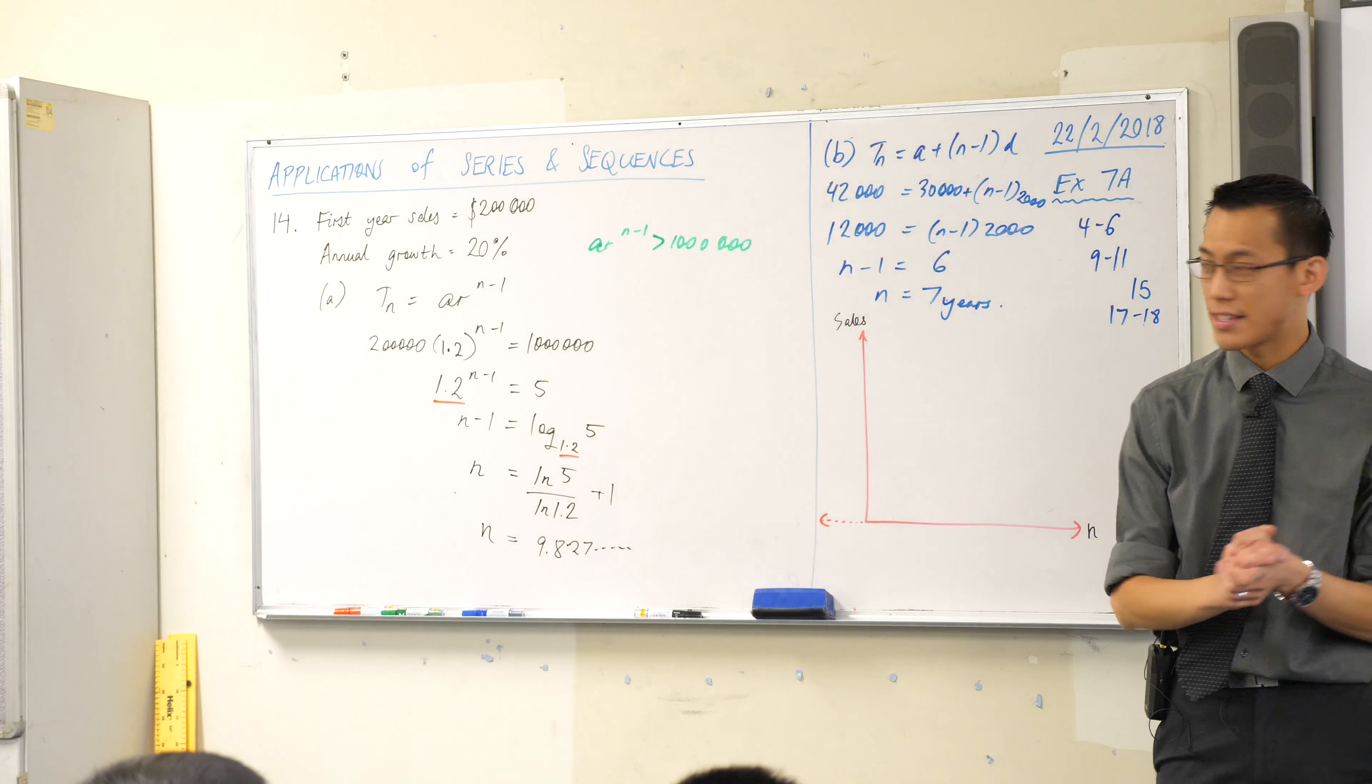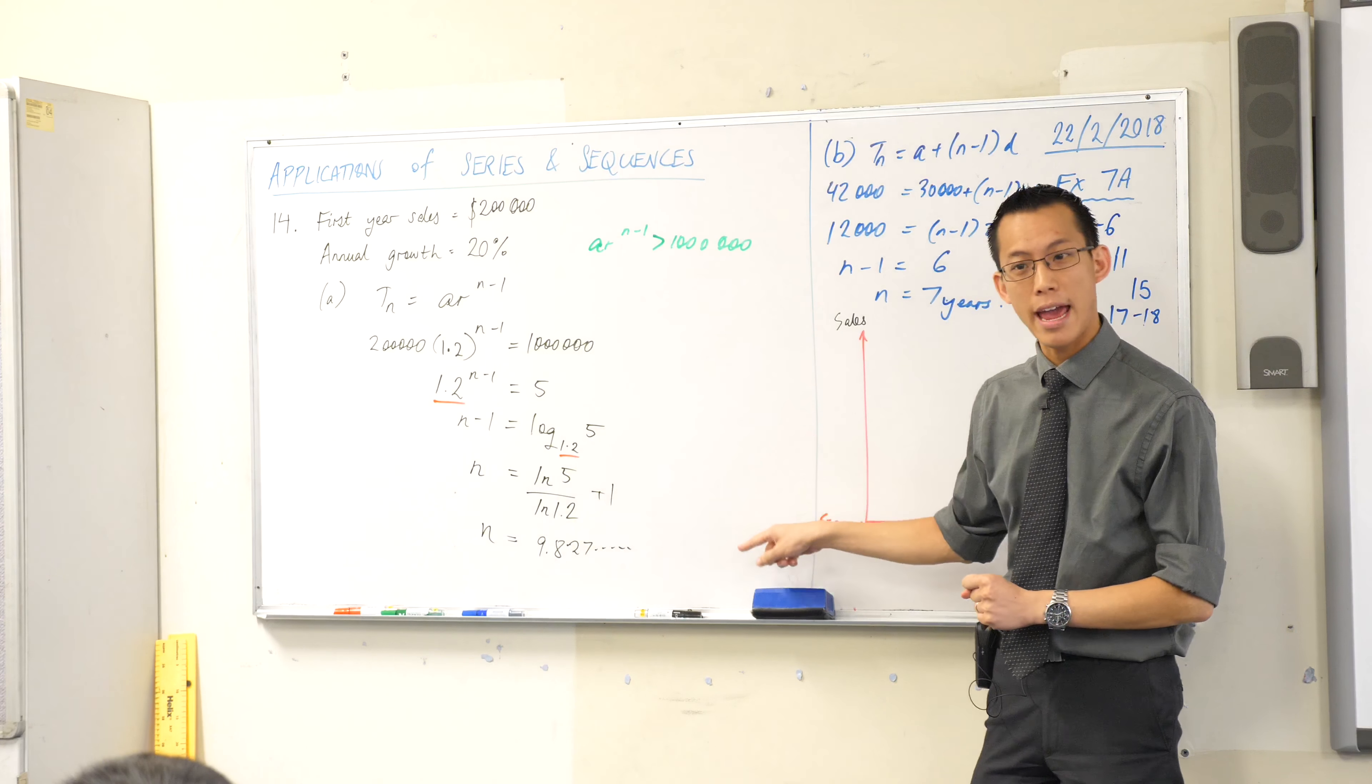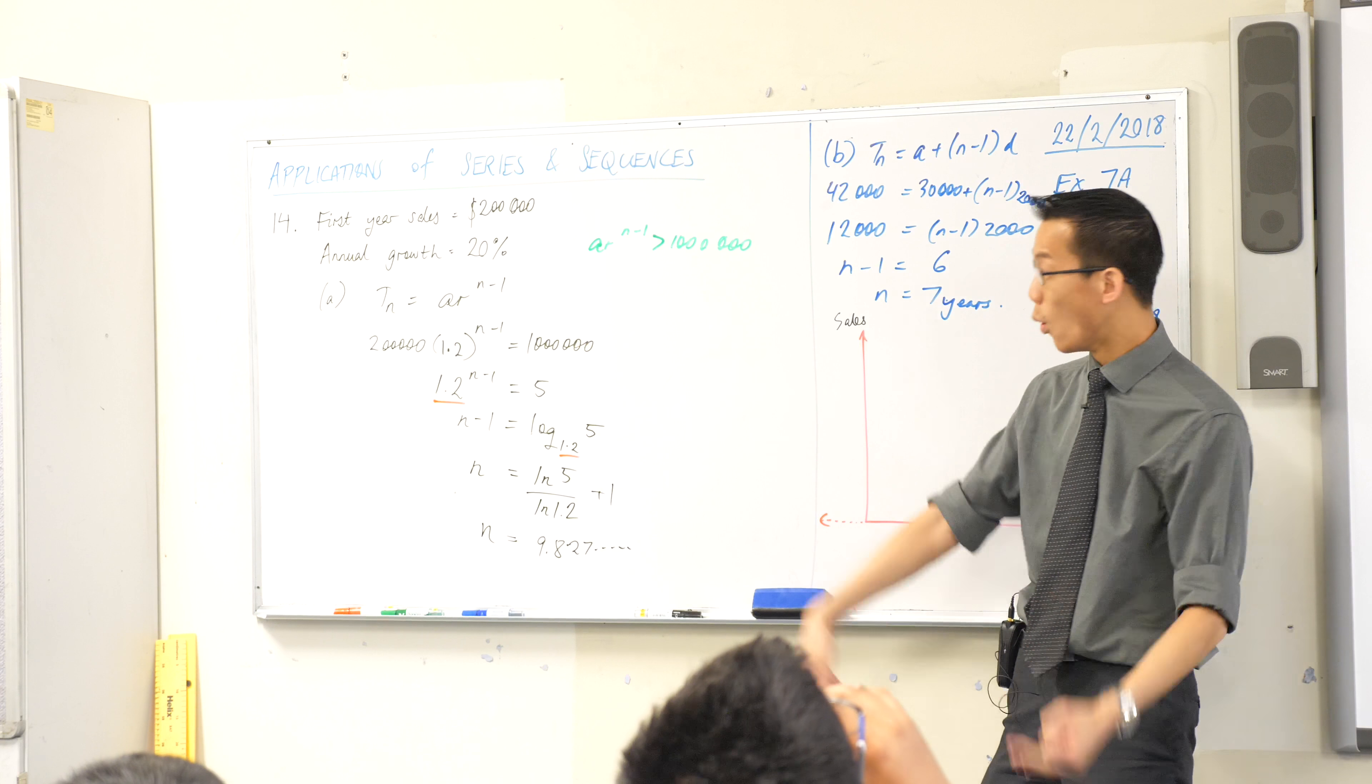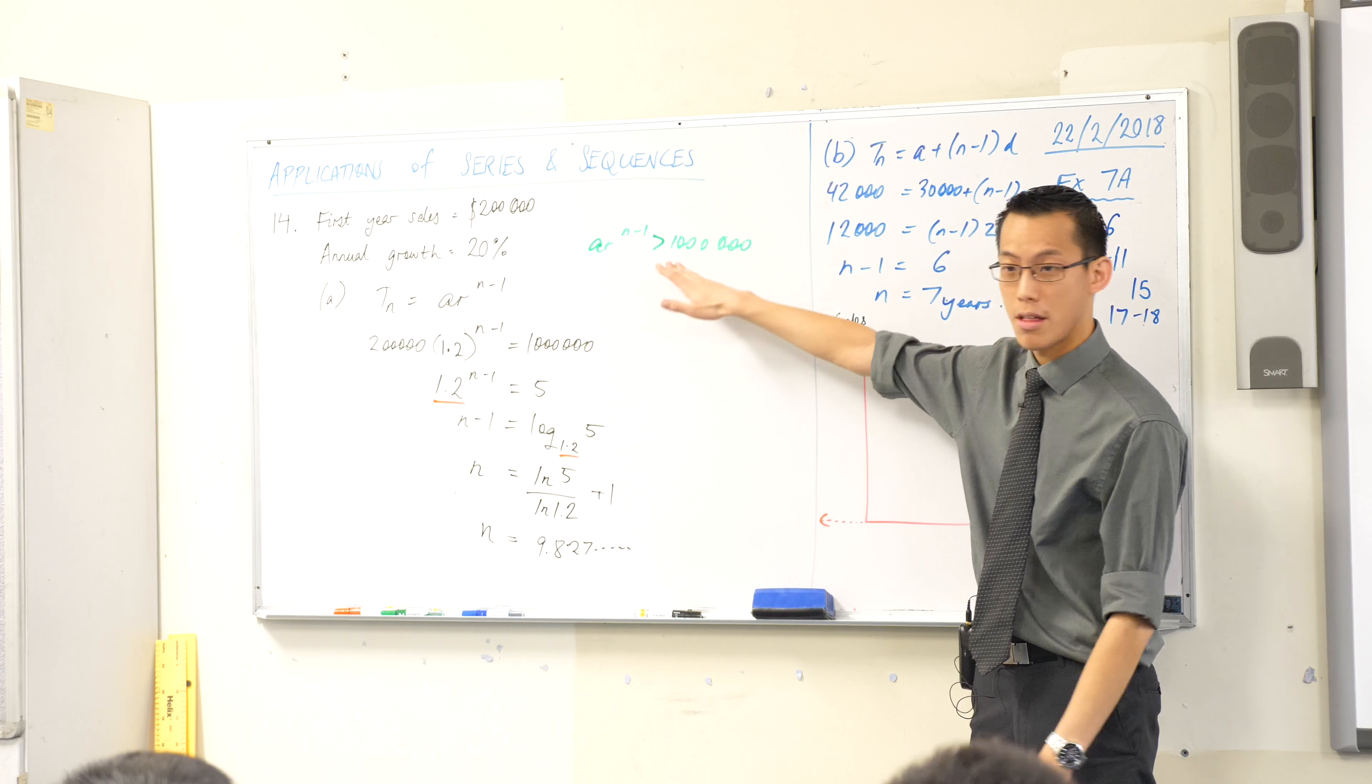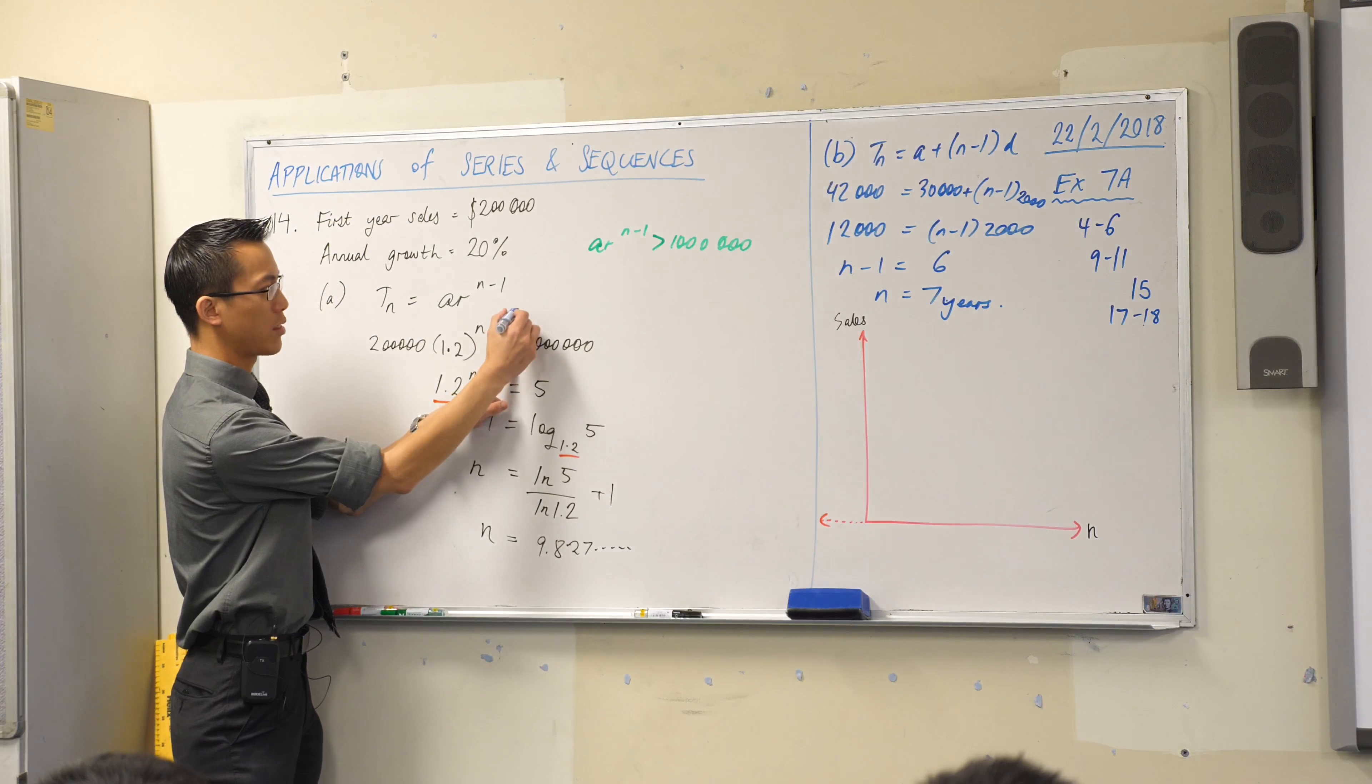If I had written this as an inequality right at the beginning, in some ways I would have my answer now, right? Because I'd say, excuse me, n has to be greater than 9.8, so the next year is going to clearly be 10. And there's your answer. Year 10, year 11, year 12, all of them would exceed a million dollars because you just get bigger and bigger and bigger. Now, what was the reason why I chose to write an equation rather than inequality? Where would I have written it?